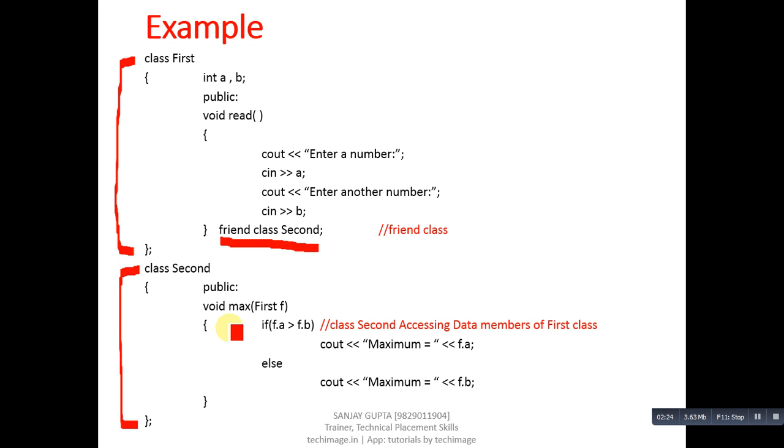Then if condition is accessing f.a and f.b. Here A and B both are data members which are available in First class but we are accessing them in Second class. If this condition is true then maximum f.a will be printed, otherwise maximum f.b will be printed.